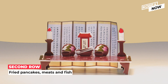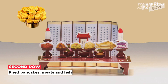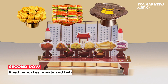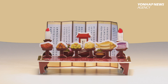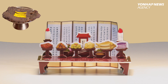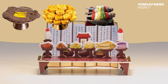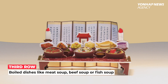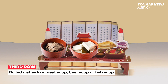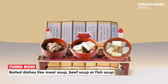The second row is for fried pancakes like jeon, some meats and fish — basically the main dishes. From left to right, you put meats, fried pancakes, fried fish, and sirutteok, which is another rice cake. Next, place boiled dishes like meat soup, beef soup, or fish soup in the third row.